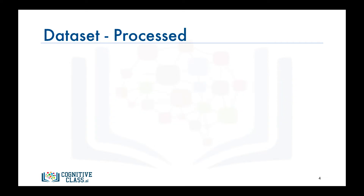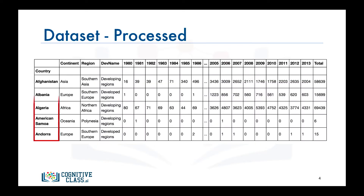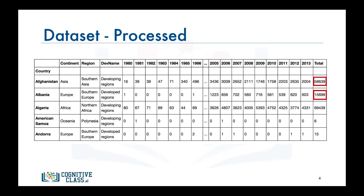Now let's process the data frame so that the country name becomes the index of each row. This should make retrieving rows pertaining to specific countries a lot easier. Also, let's add an extra column which represents the cumulative sum of annual immigration from each country from 1980 to 2013. So for Afghanistan it is 58,639 total, and for Albania it is 15,699, and so on. And let's name our data frame DF_Canada.